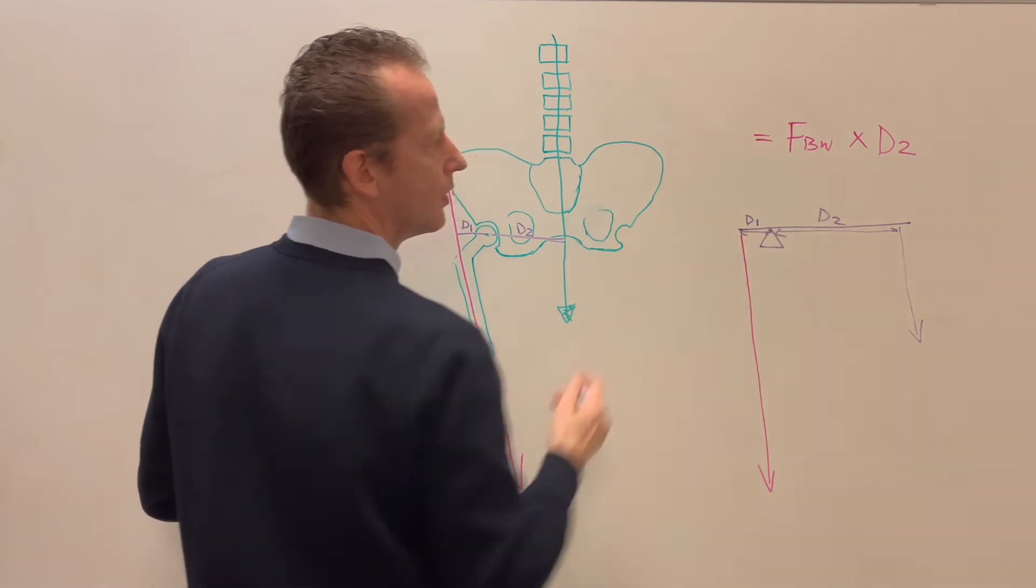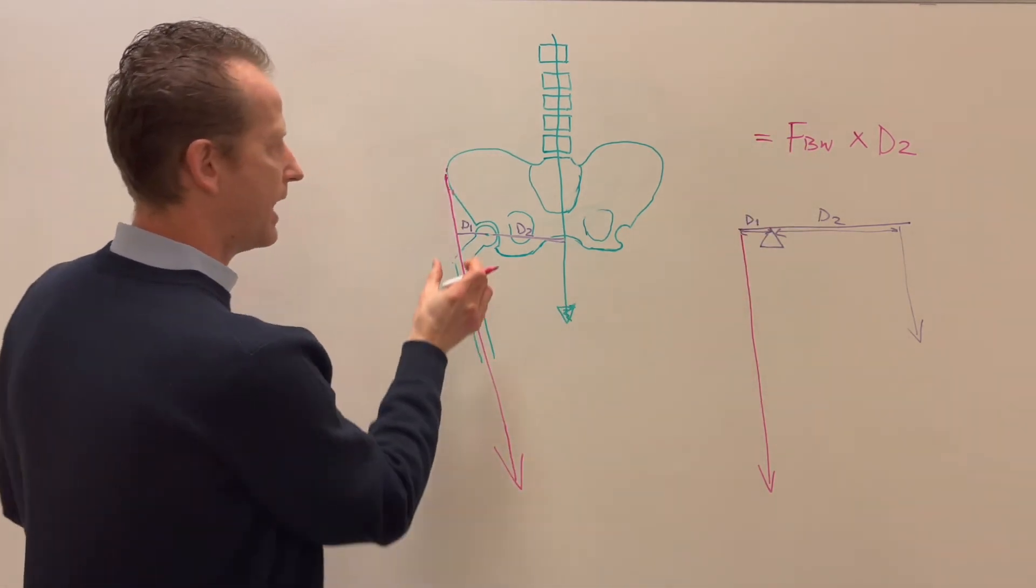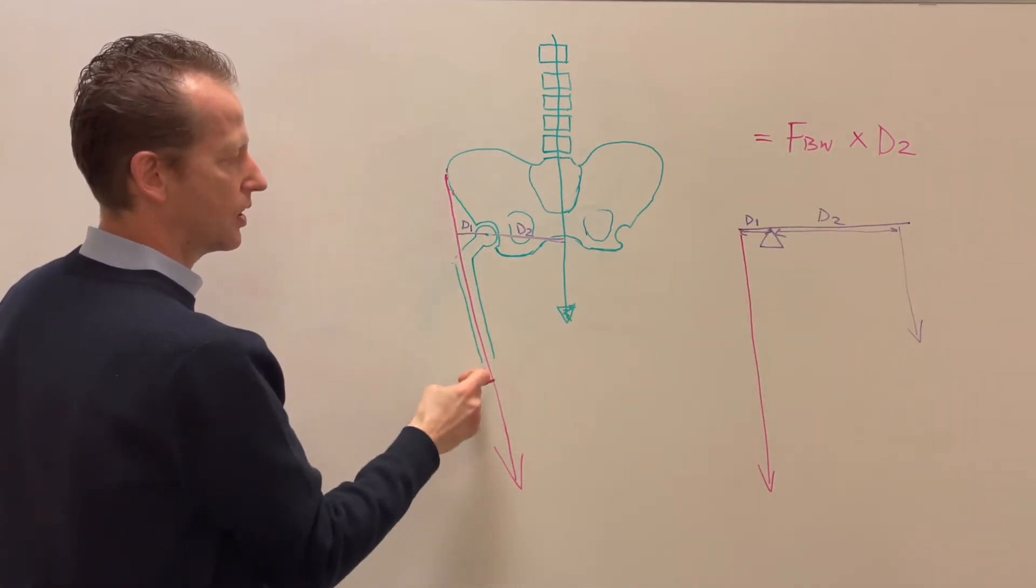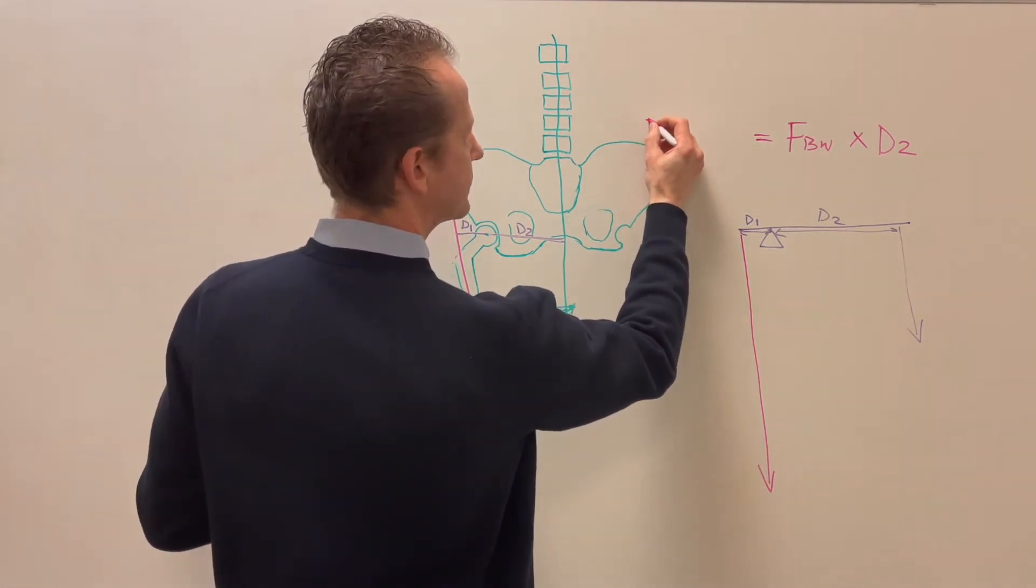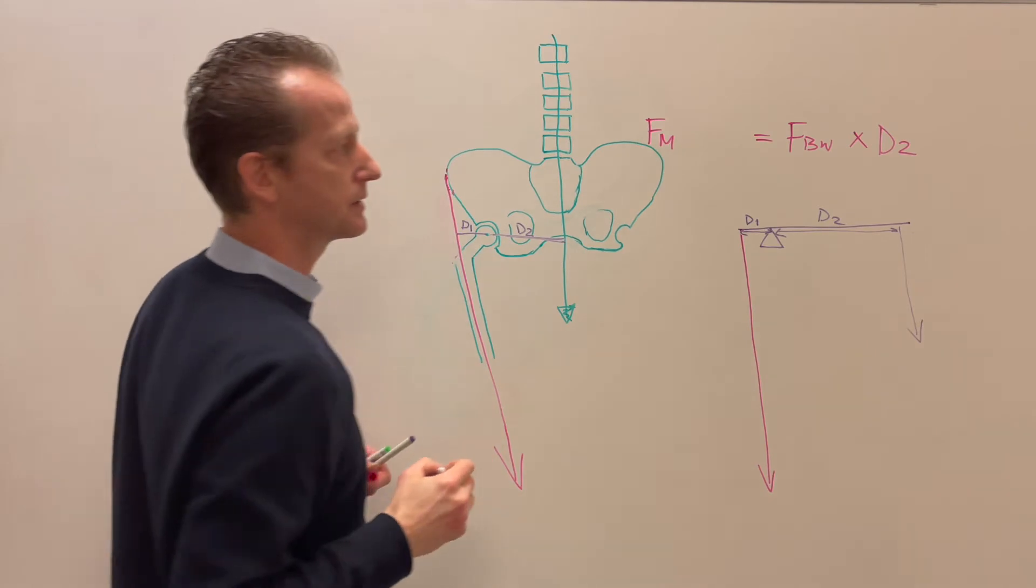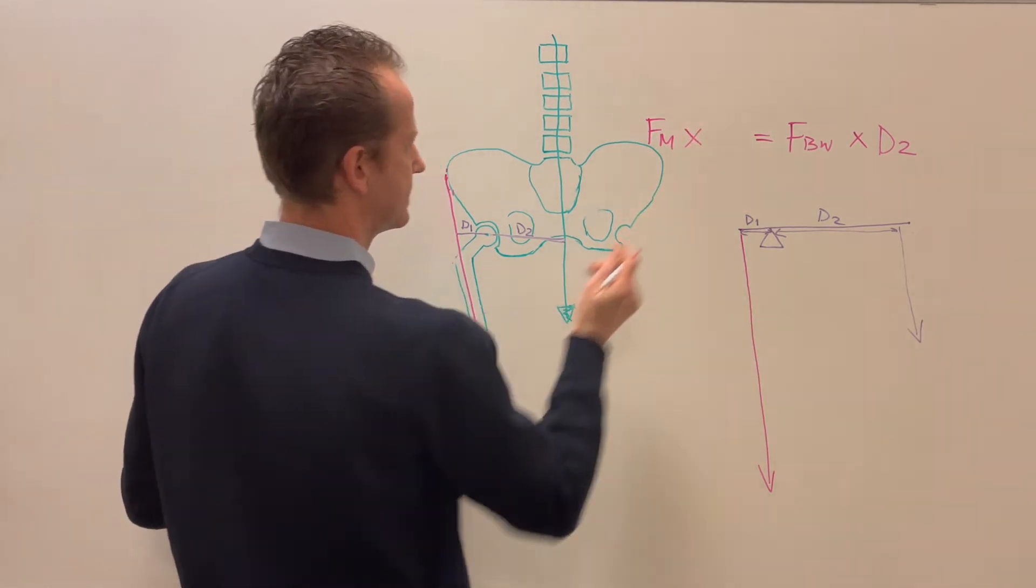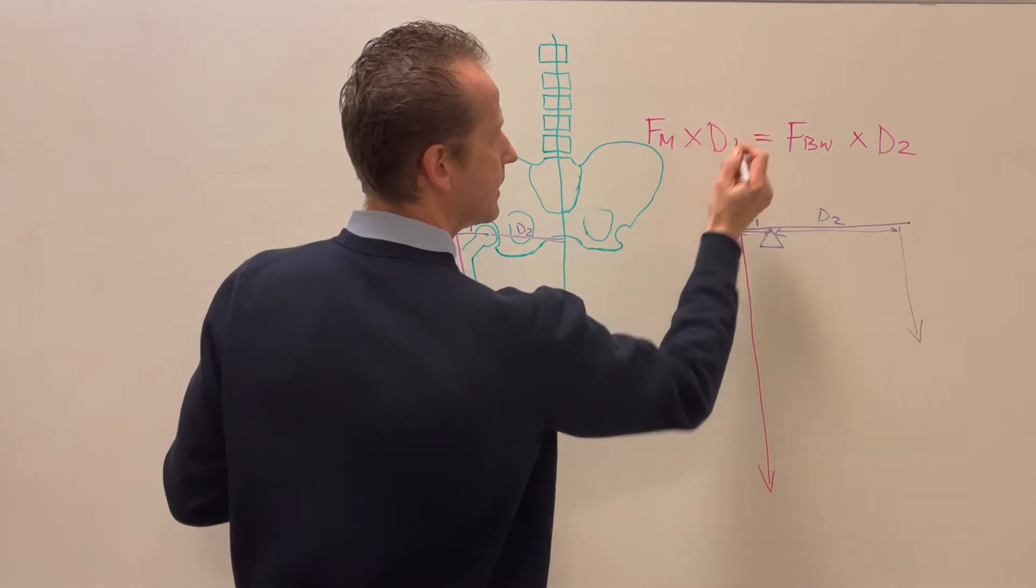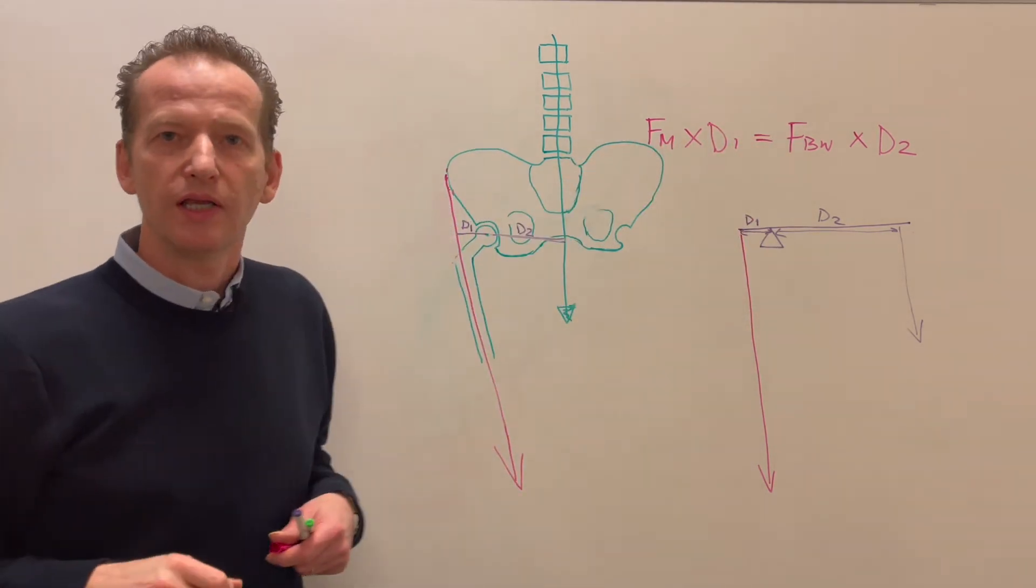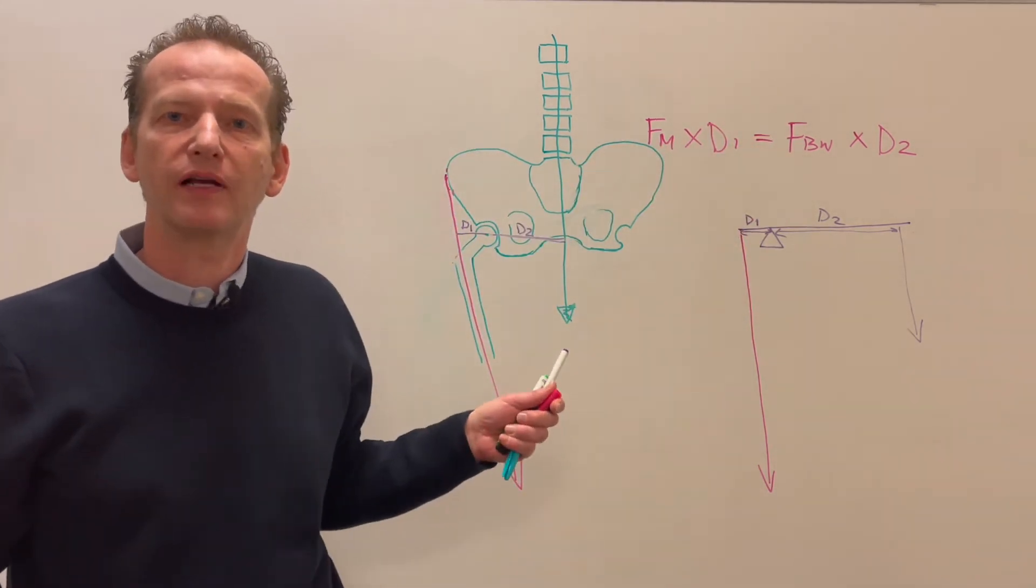They need to equal or be balanced by force of your muscles, times D1. When these two equalize, you're in a perfect balance.